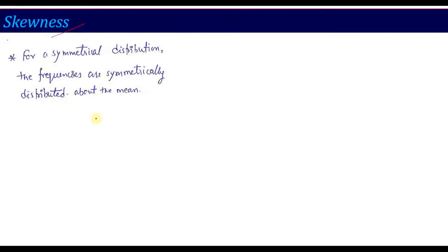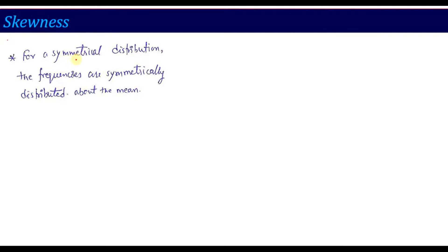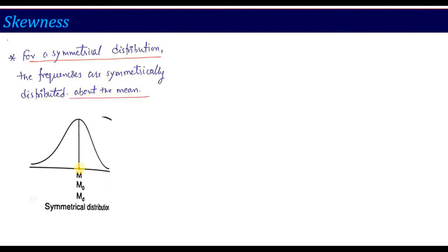What is skewness? We know that when data is distributed, you can create a distribution. We all want that distribution to be symmetrical. If a distribution is symmetrical, all the frequencies are symmetrically distributed about the mean. In that case, the mean, mode, and median are all at the same point — you have what is called a symmetric distribution.